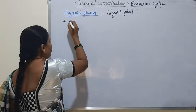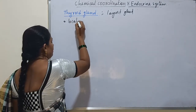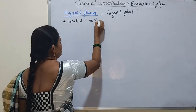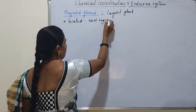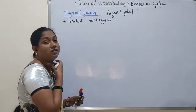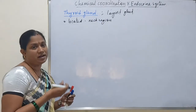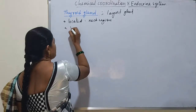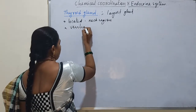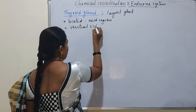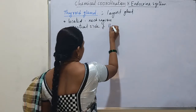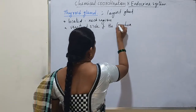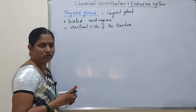Location: it is located in the neck region. The thyroid gland is present on the ventral side of the trachea.